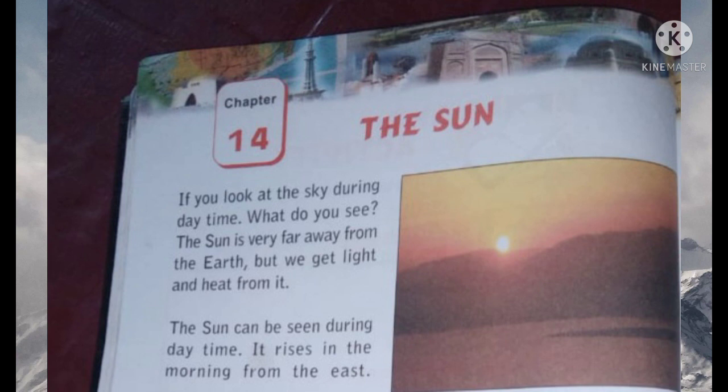The sun is very far away from the earth, but we get light and heat from it. The sun can be seen during daytime. It rises in the morning from the east. Here is the word 'rises' and its meaning is to stand up, get up, or move from a lower position to a higher one.